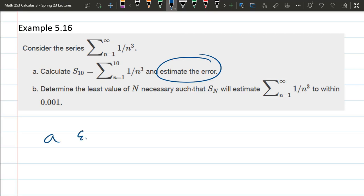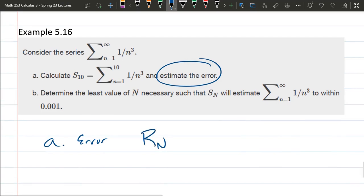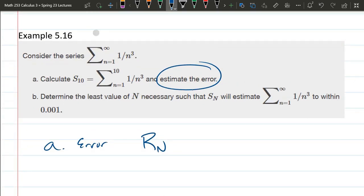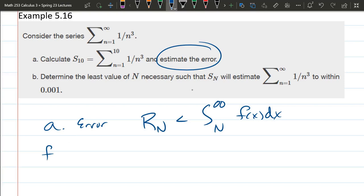So part a, the error, if we computed 10 terms, above it was called rn, capital N right there, and that's the estimate we're going to use. So it's less than integral n to infinity of f(x) dx. Our function f(x), if you've hopefully done some integral tests already, you're just replacing this 1 over n cubed. You're just replacing n by x, so it's 1 over x cubed. That's f(x).